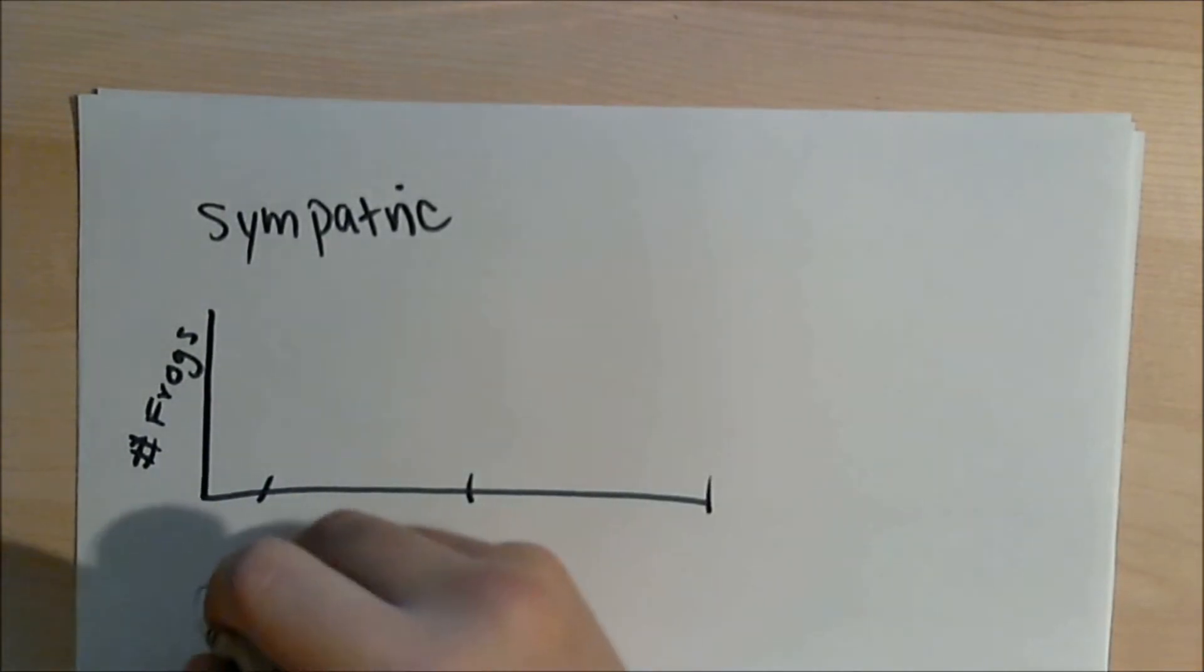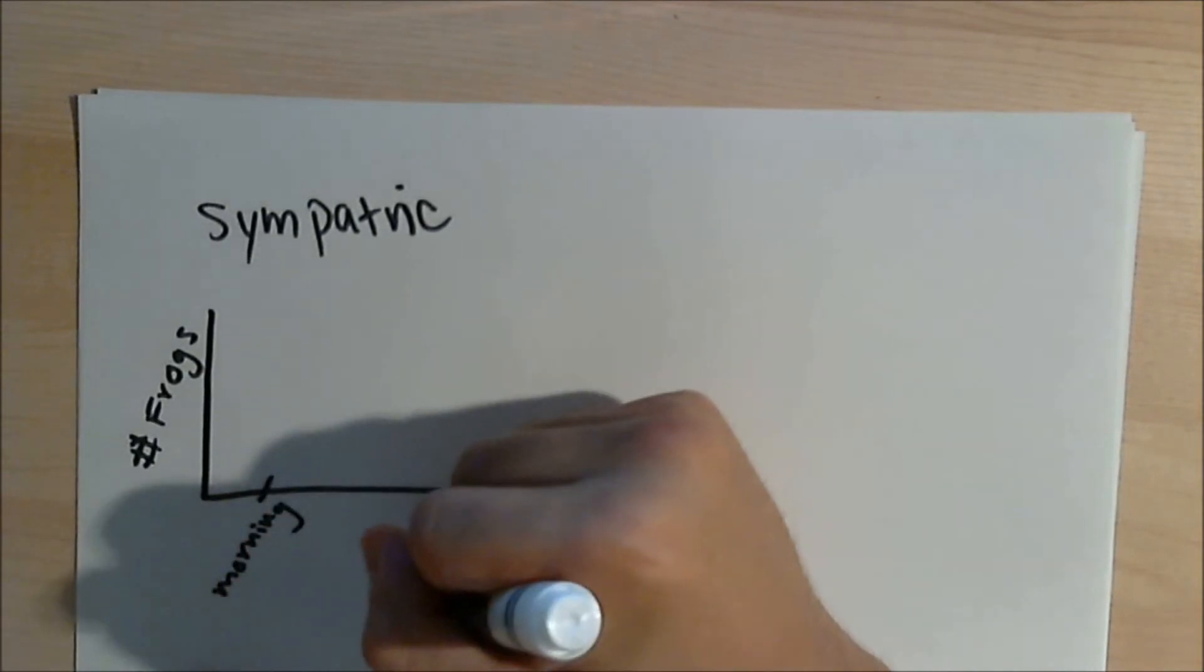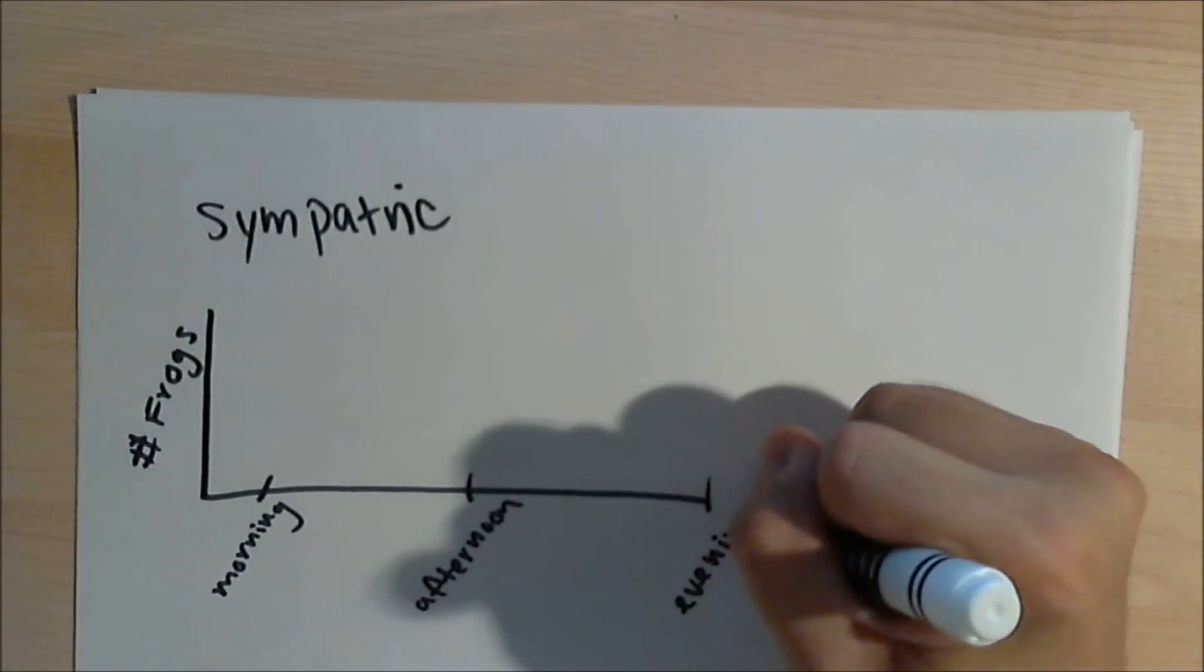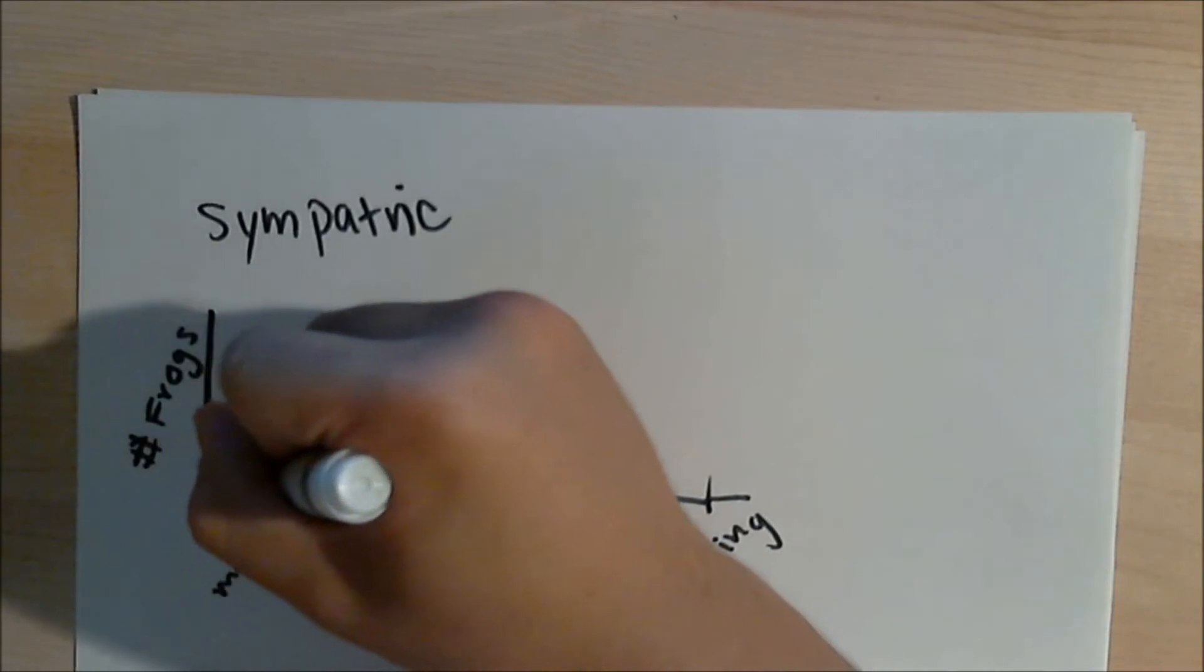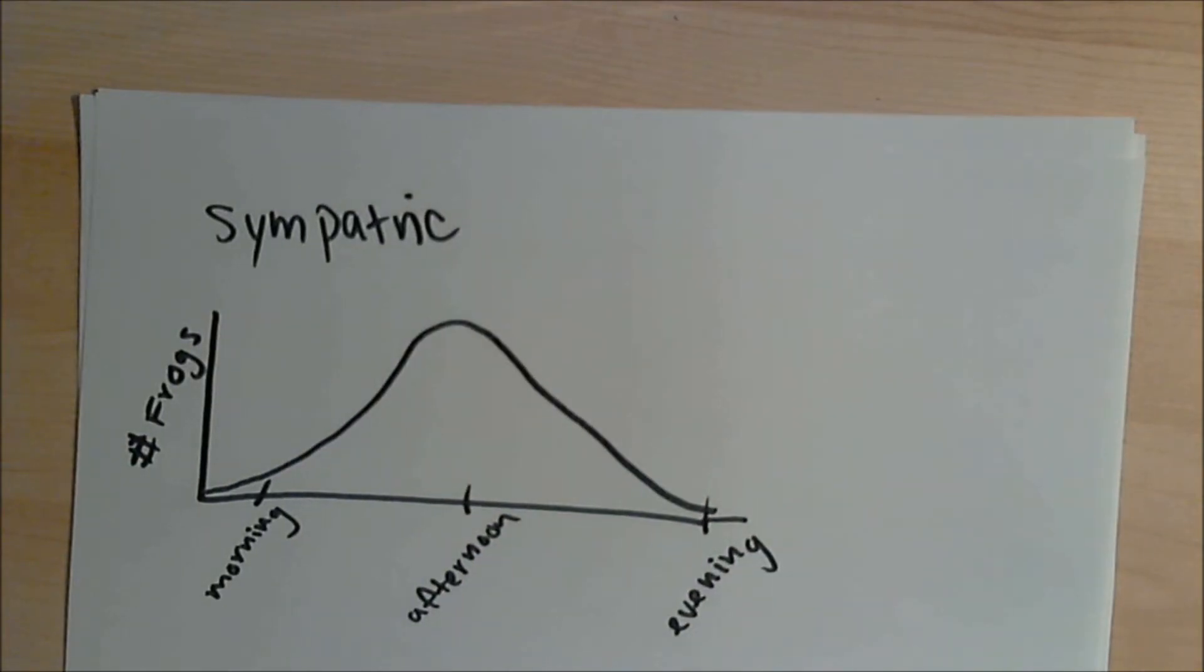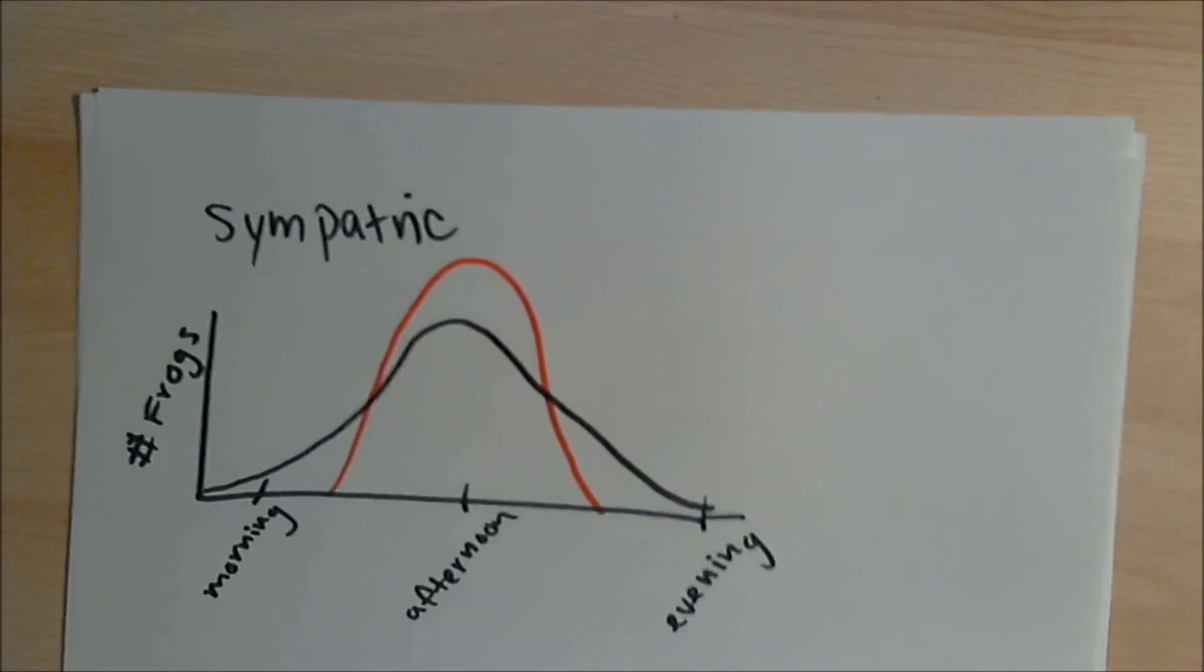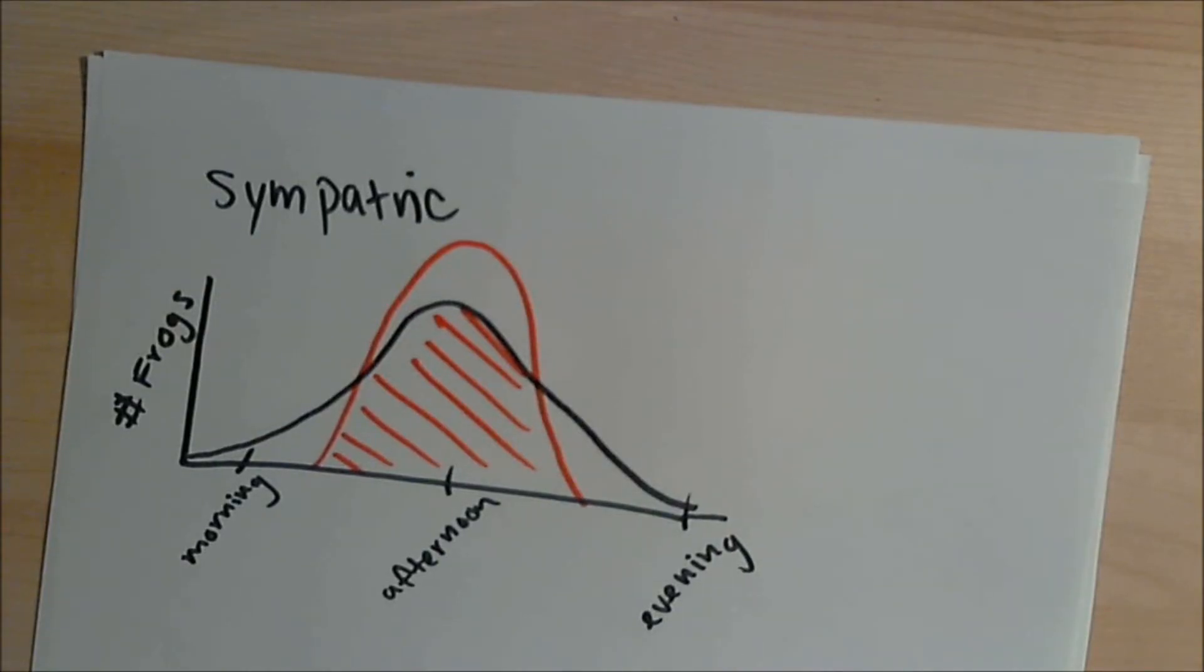Let's say they mate during the morning, the afternoon, and the evening. Let's say that the frogs mate a lot during the afternoon. But let's say we introduce a predator, maybe a hawk or a snake. Let's stick to hawks. And they are very active during the noon. So these frogs that are mating during the noon will probably die off because the hawks will be eating them.